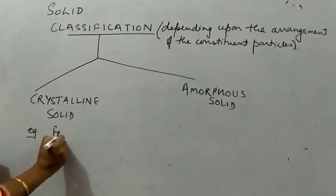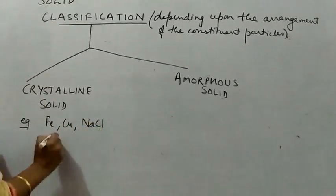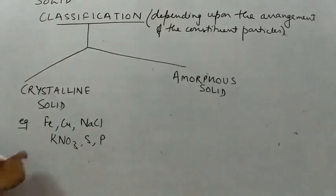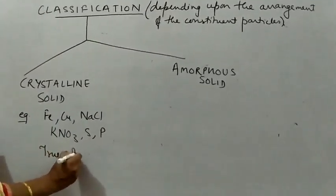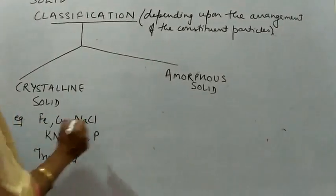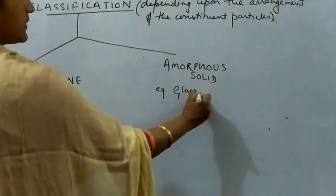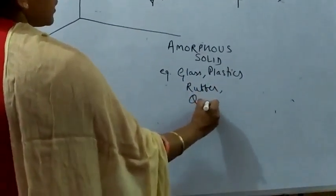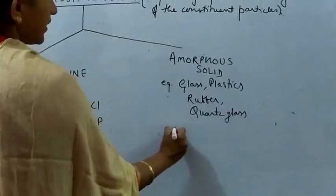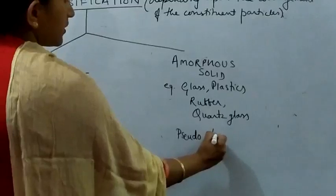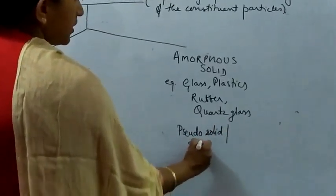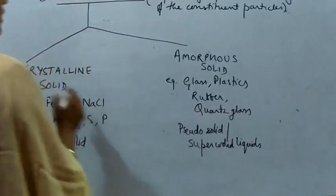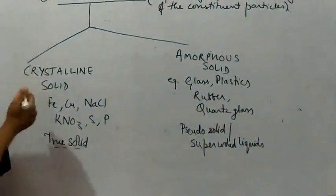Now, let us first take the example that what example of crystalline solid. So, we can take any matter here, iron, copper or NaCl, KNO3, sulfur, phosphorus. They all belong to the crystalline solids and they are known as the true solid. The crystalline solid are known as true solid. Amorphous solid, we have got the example glass, plastics, rubber, quartz glass. And these are known as pseudo solids or super cooled liquids.